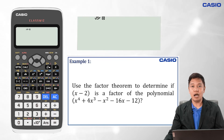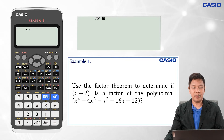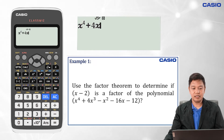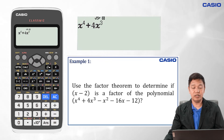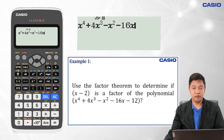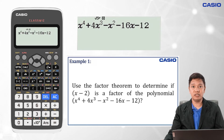To do so using our Casio ClassWiz, we need to key in the polynomial by pressing the following keys: x, then the exponent button, then 4, arrow right, plus 4, then x, then Shift and the square button to get the cube, minus x, then the square button for x squared, then minus 16x, then minus 12 for the constant term.